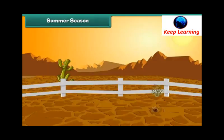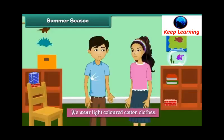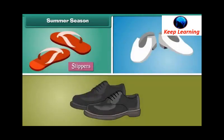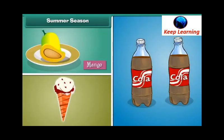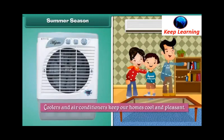In the summer season, the weather is hot and sunny. We wear light-colored cotton clothes to stay cool. We wear slippers and sandals and avoid shoes. We enjoy mangoes, ice creams and cold drinks. We use coolers and air conditioners to keep our homes cool and pleasant.